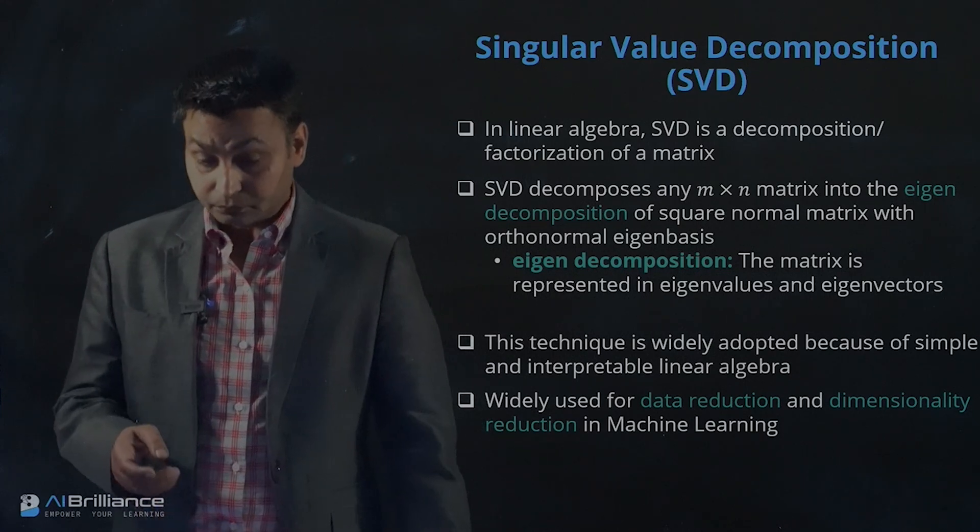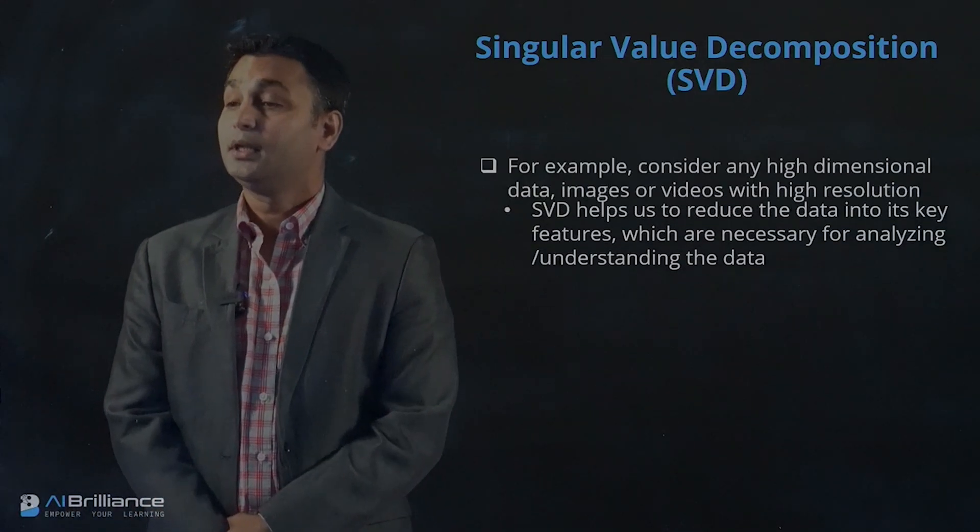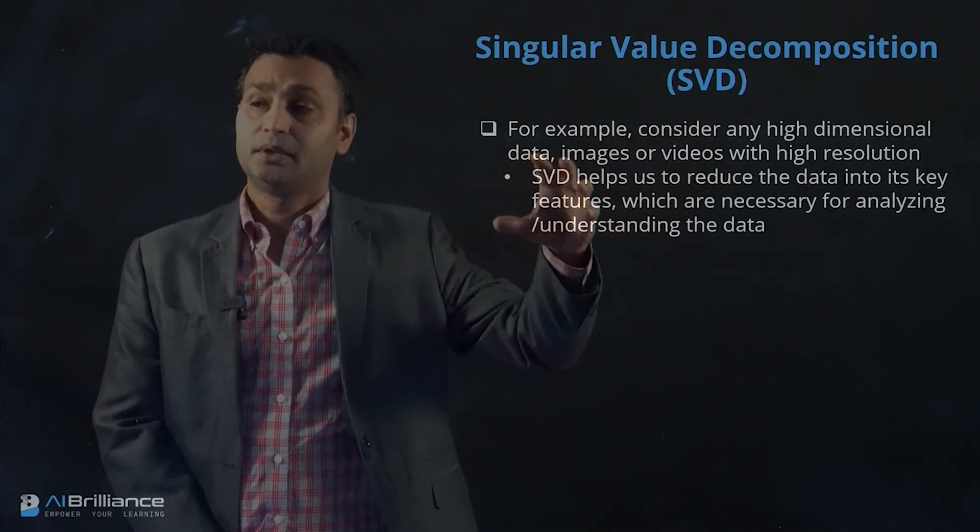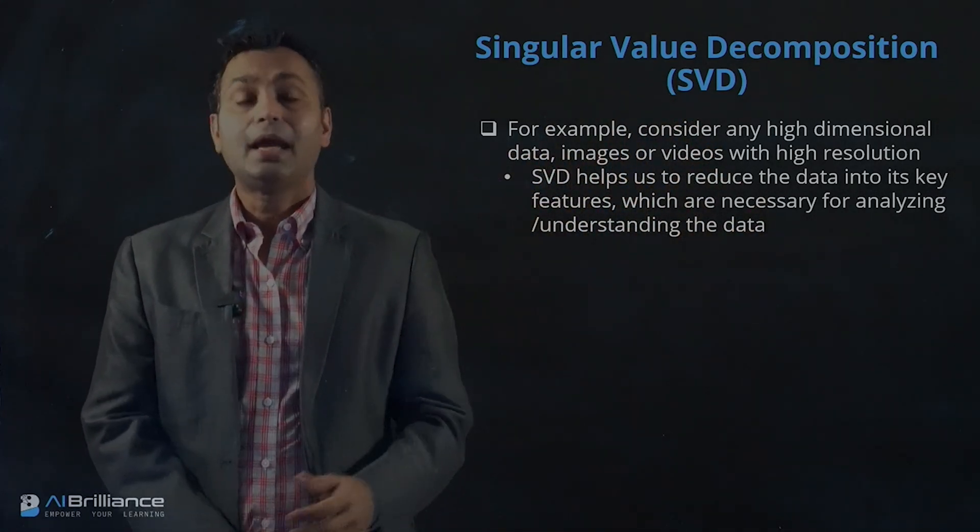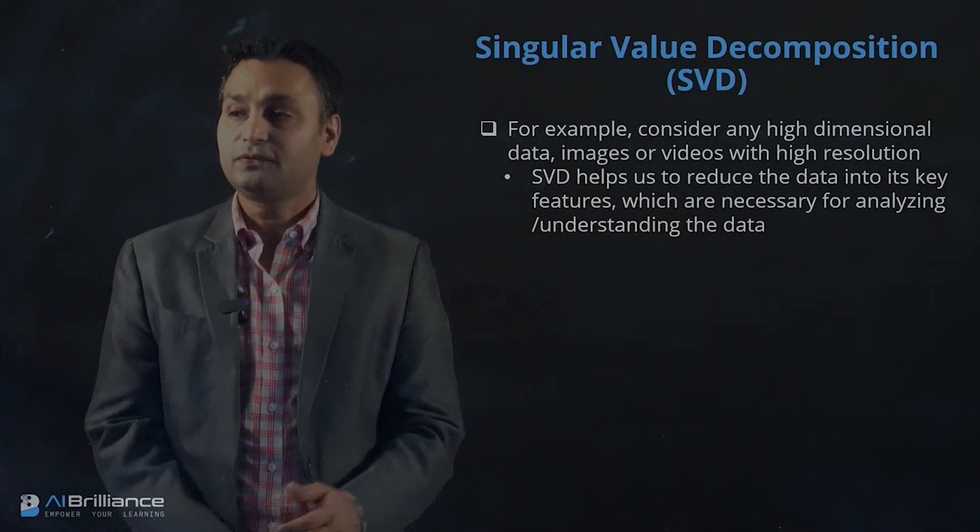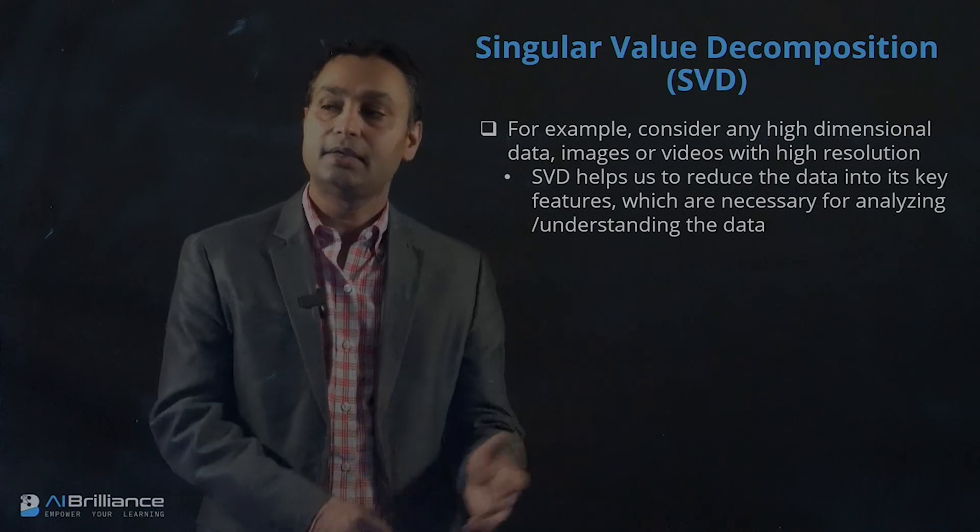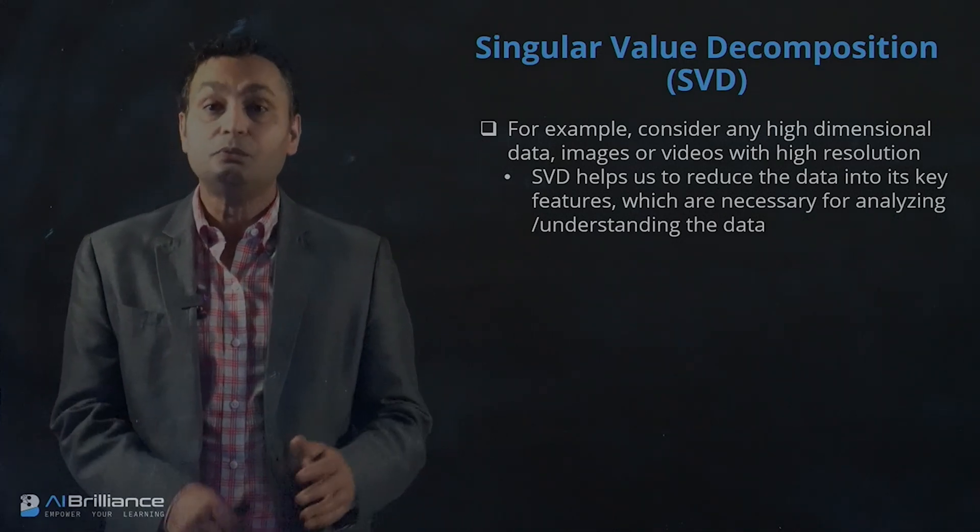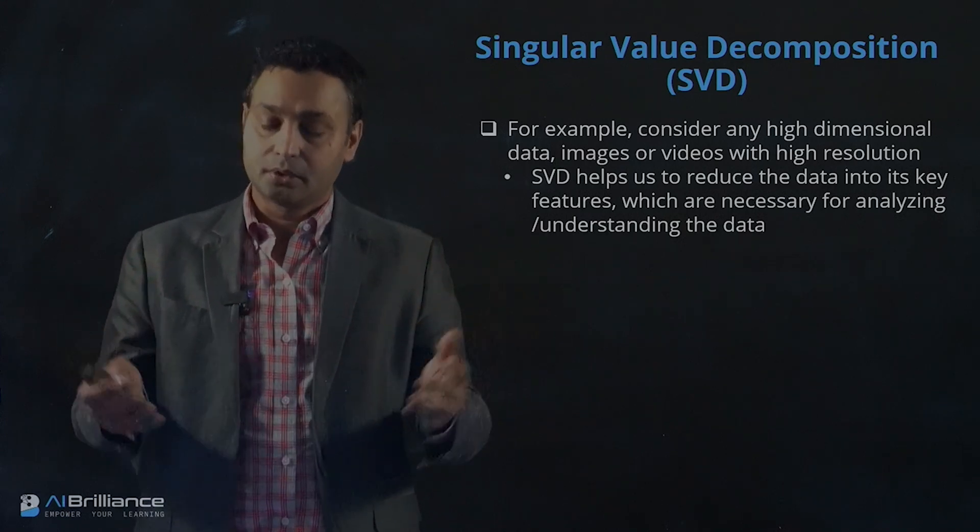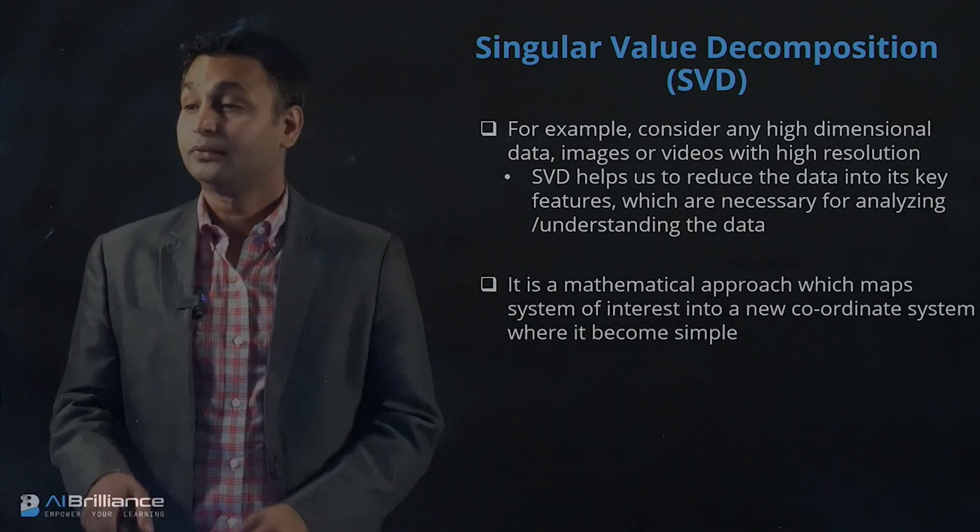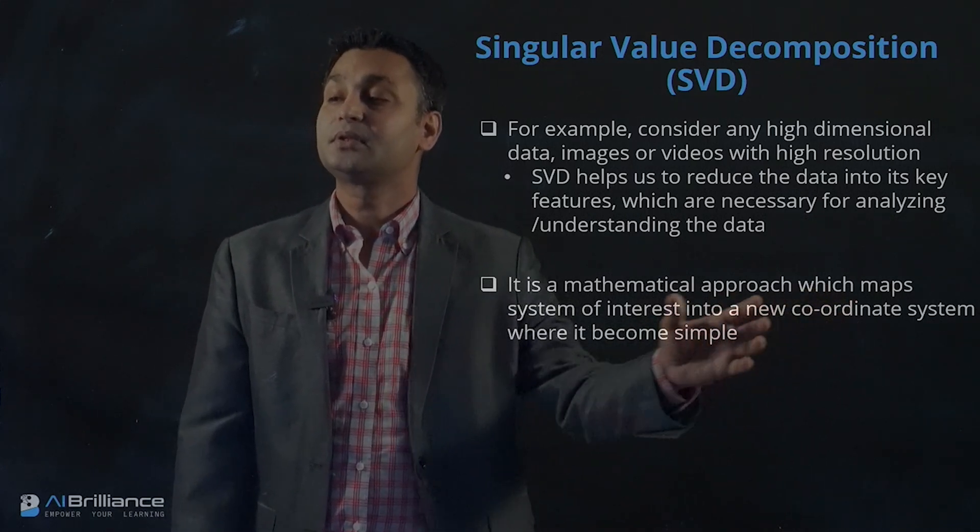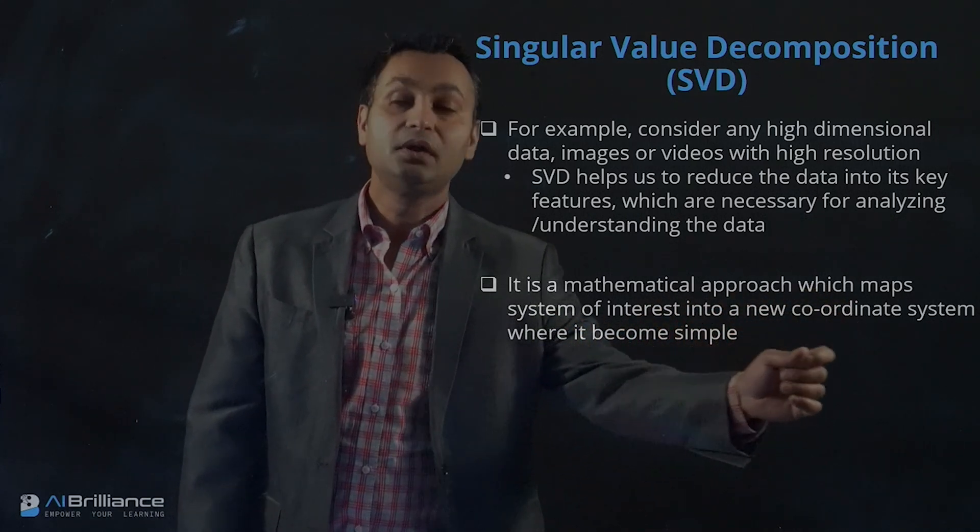When we talk about SVD, we consider any high dimensional data such as images or videos with high resolution. We can use SVD to reduce that data into key features which are necessary for analyzing and understanding the data, so we don't need to deal with developing techniques in the original high dimensional representations. It's a mathematical approach which maps the system of interest into a new coordinate system where it becomes simple.